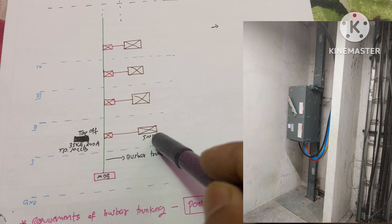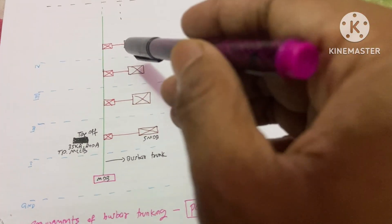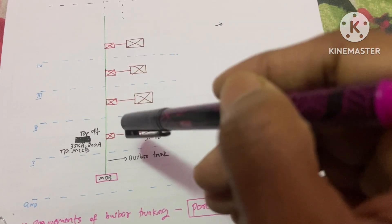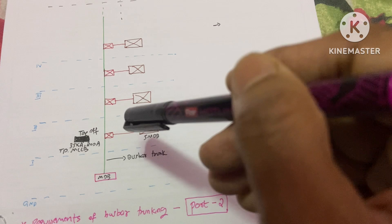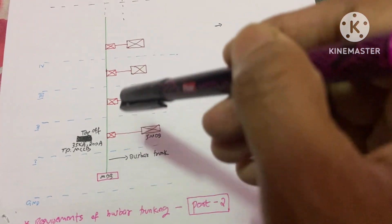Same for the other floors also. So now you might have understood what the bus bar trunking system is. Now I want to talk to you about this trunking system in detail.